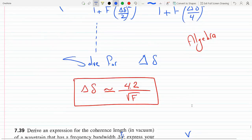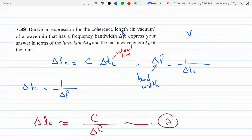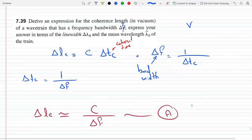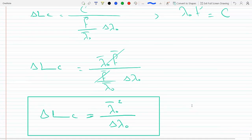In the derivation in 7.39, I derived an expression for the coherence length in vacuum of a wave train that has a frequency bandwidth of delta f. I use delta f, the Greek letter nu, and the answer turned out to be this.